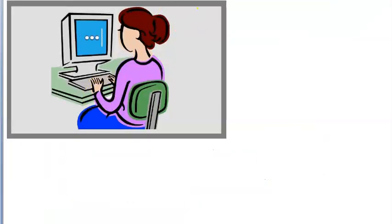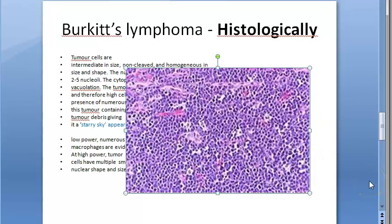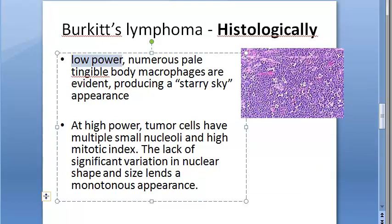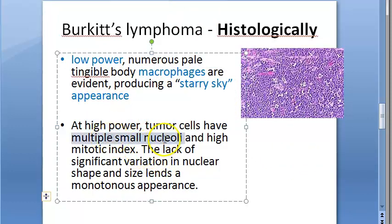Now let us move on to the histology. In one word, there will be a starry sky appearance. In low power you see the starry sky appearance. What are these stars? They are macrophages. In high power you will see multiple small nucleoli, a high mitotic index, and lack of significant variation in nuclei size and shape — a monotonous appearance.